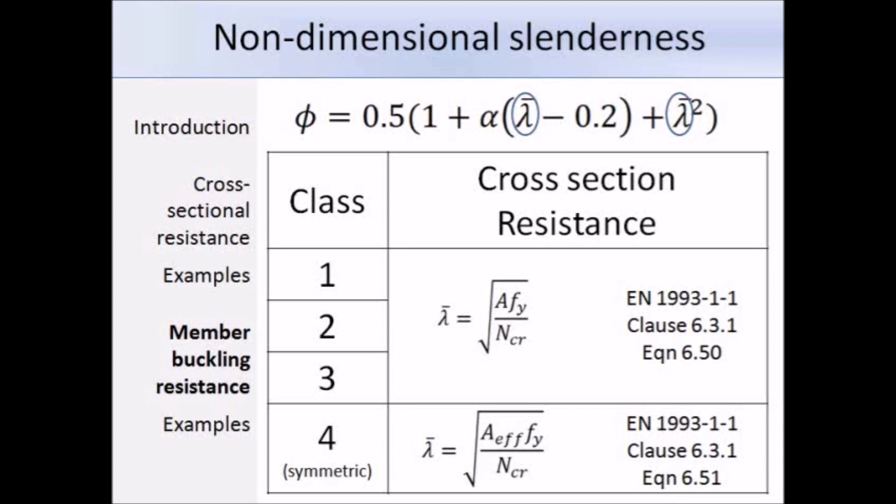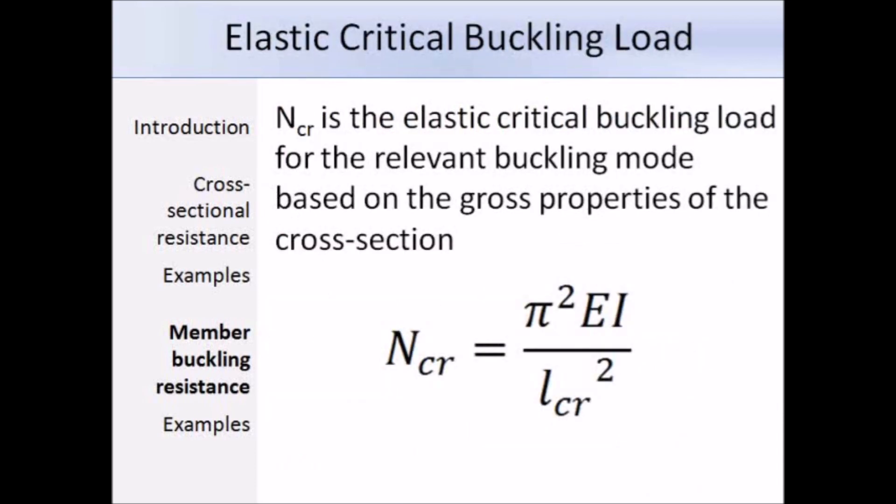This is the equation for the elastic critical buckling load. It's not given in the Eurocode, but you should be familiar with it since it is the Euler load. We have pi squared times the Young's modulus times the second moment of area divided by the effective length squared. It's just based on the gross properties of the cross section.